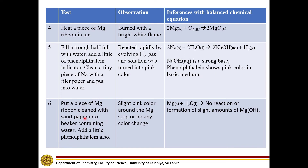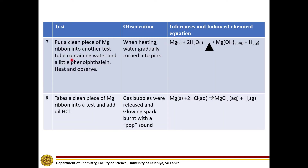When magnesium ribbon reacts with water, a slight pink colour around the magnesium strip or no colour change was observed. This slight pink colour is due to the formation of a small amount of magnesium hydroxide. When we heat the boiling tube containing the magnesium strip, the water gradually turns pink due to the formation of basic magnesium hydroxide.